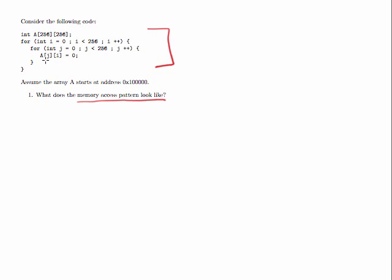Notice we have a multidimensional array — in this case, a two-dimensional array where each dimension is 256 entries. It's an array of integers, and we're indexing this with i and j, which are two loops. The outermost loop is i, and the inner loop is j. So j is the inner loop, and that's going to affect our access pattern the most.